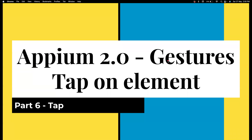Hi everyone, welcome back to my channel Testing Minibytes. In this video we're going to see how we can tap on an element. APM 2.0 doesn't have any changes related to gestures, but the APM Java client 8.x version does. If you are using APM Java client version less than 8, you might be using AndroidTouchAction and UIScrollable, but those are now deprecated. Tapping on an element is more of a native event than a regular click — apart from that there is no significant difference between the two.